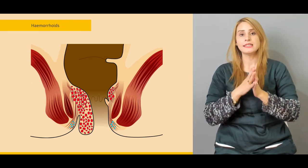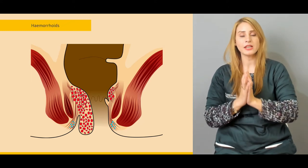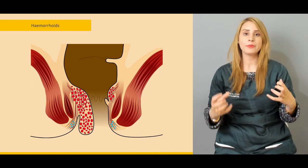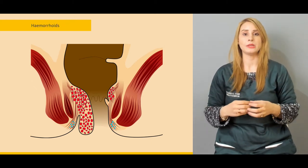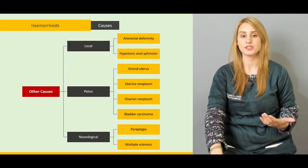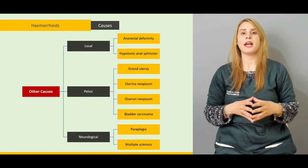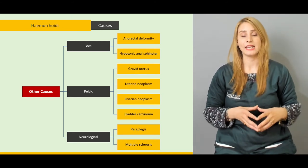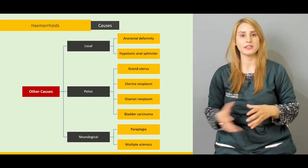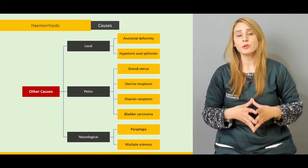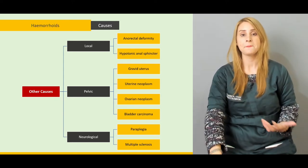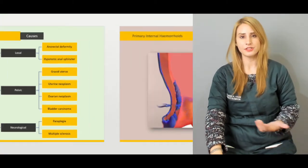We will be talking about the differences between the upper anal canal and the lower anal canal, and we'll be talking about the normal anal cushions which are present in the anal canal. We would be talking about the normal positions. Then we will be talking about the hemorrhoids and, more importantly, we'll be talking about the causes, which are the local pelvic neurological causes, and we'll be talking about different theories which are being proposed for the etiology of the hemorrhoids.